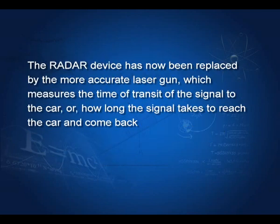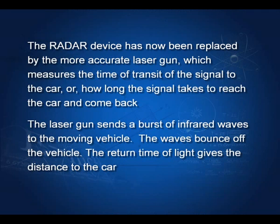The radar device has now been replaced by a more accurate laser gun. The laser gun sends a bunch of signals that are reflected by the car. From the travel time of each successive signal going to the car and back, the velocity of the car can be calculated. This is a more accurate modern device now used by police.